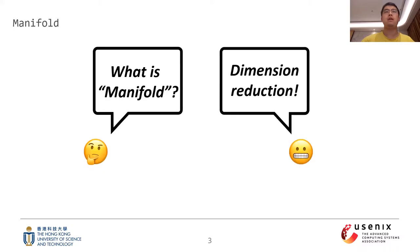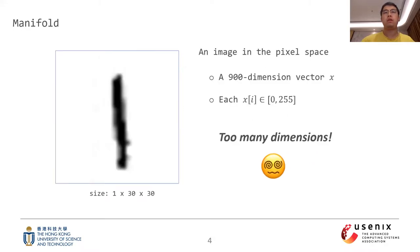First things first, what is manifold? To be short, it is a concept for dimension reduction. Let's see an image of digit 1. This image has only one color channel and its size is 30 times 30, so it has in total 900 pixels and each pixel value ranges from 0 to 255. In other words, this image is represented as a 900-dimensional vector in the pixel space. Of course, there are too many dimensions.